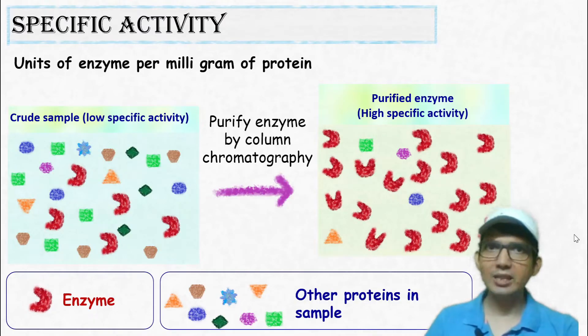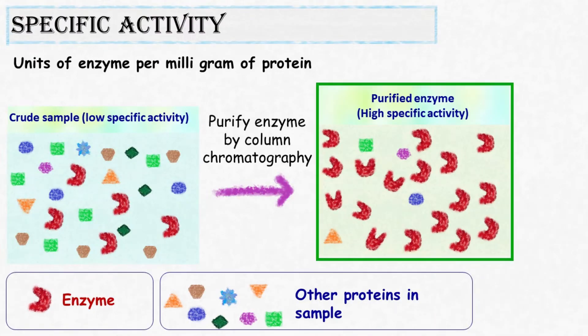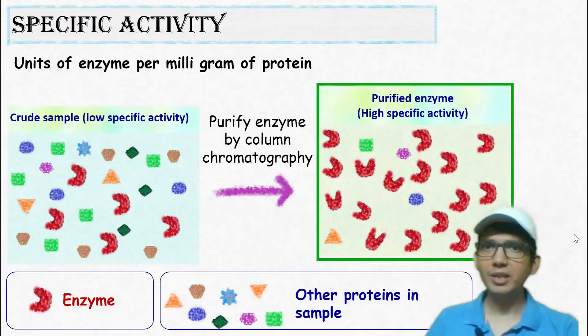In this fraction, the number of units per milligram of protein will be much more. Hence, specific activity will be high. Specific activity of enzyme increases by several fold after purification.